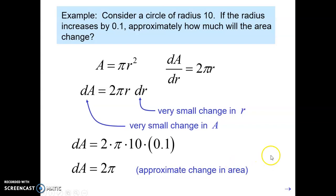This is an approximate change because we don't have any units here. We just said that the circle has radius 10 — we don't know what the units are or what the time is. We just know that this is relative, and this is considered an approximation of approximately how much the area will change. This is an application of using what's called differentials.